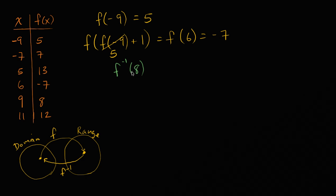How do we think about f inverse of eight? Well, f inverse of eight is whatever maps to eight. So we have to say, what mapped to eight? We see here that f of nine is eight. So f inverse of eight is going to be equal to nine.